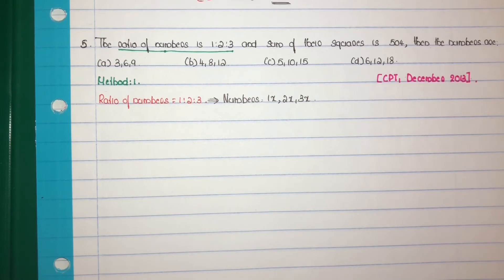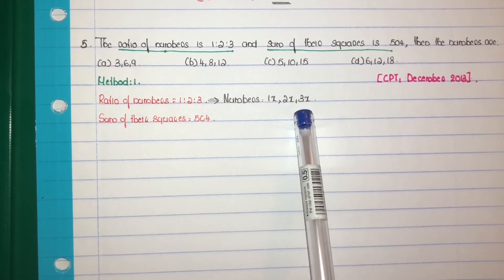Question the second part, consider. Sum of their squares is 504. That is sum of the squares of these 3 numbers equal to 504. Numbers 1x, 2x and 3x.